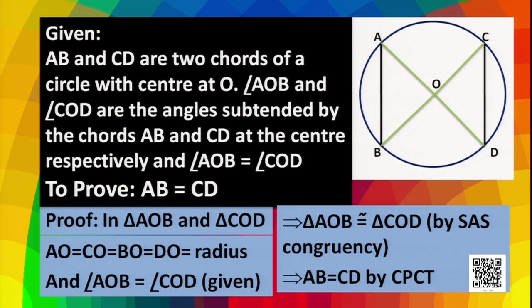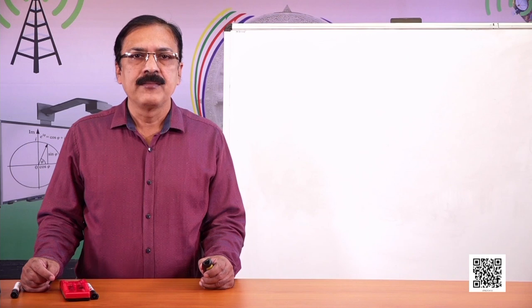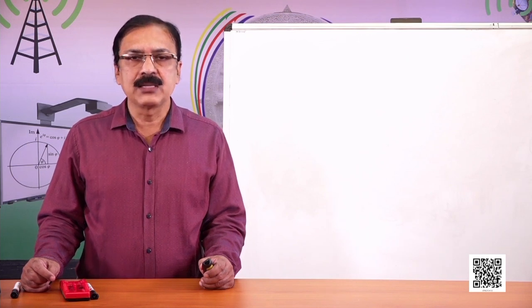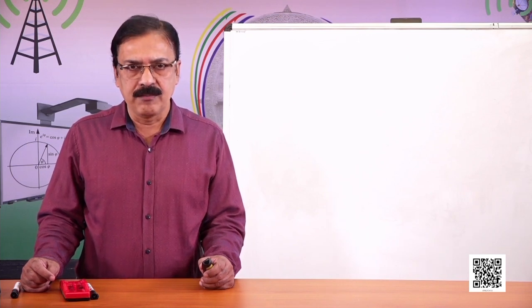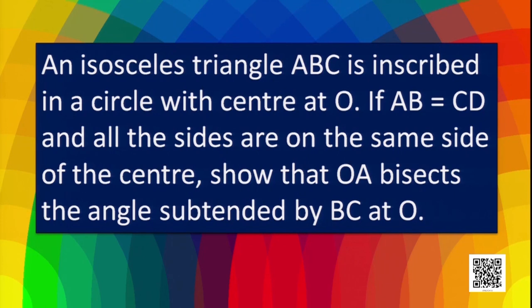So we proved these two theorems. Now let's have some application of these theorems. An isosceles triangle ABC is inscribed in a circle with center O. If AB is equal to AC and all the sides are on the same side of the center, show that OA bisects the angle subtended by BC at O.